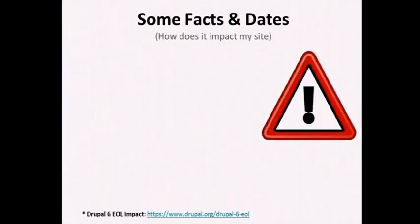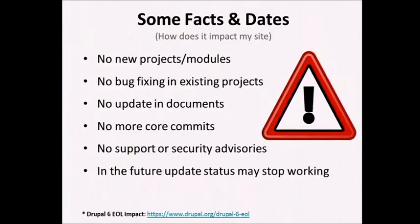What happens and how it implies to your site if D6 is ending? You will not have any new projects or modules for D6. You will not have bug fixing for existing sites, no updates in the documents, no core commits. No support or security advisors. There may be some security abuse possible, and in future updates the status may stop working also. These are some facts for D6.